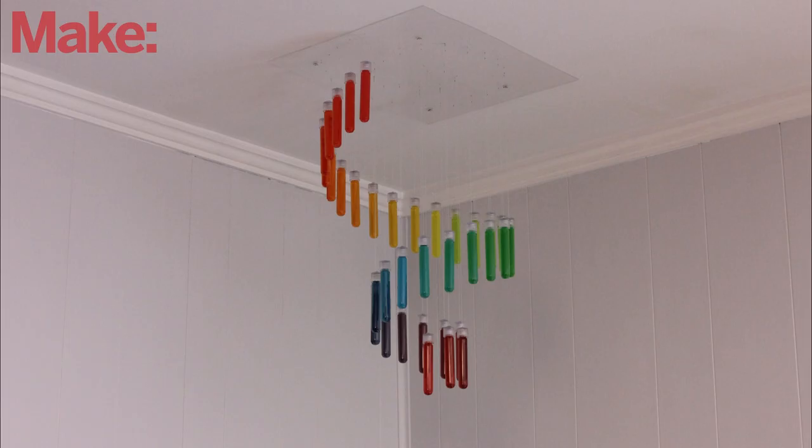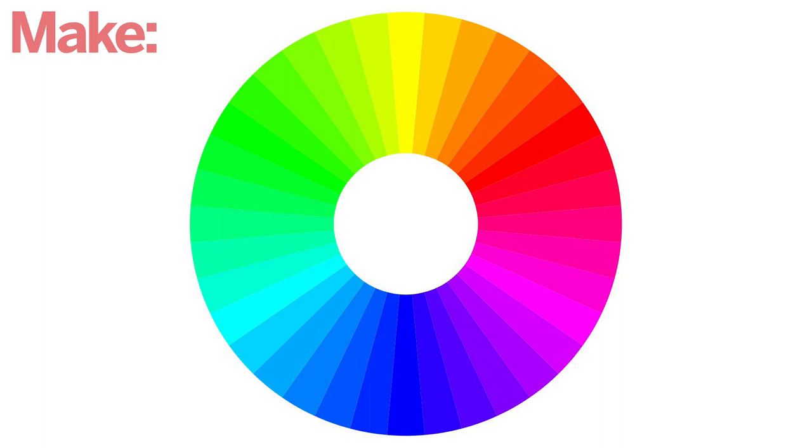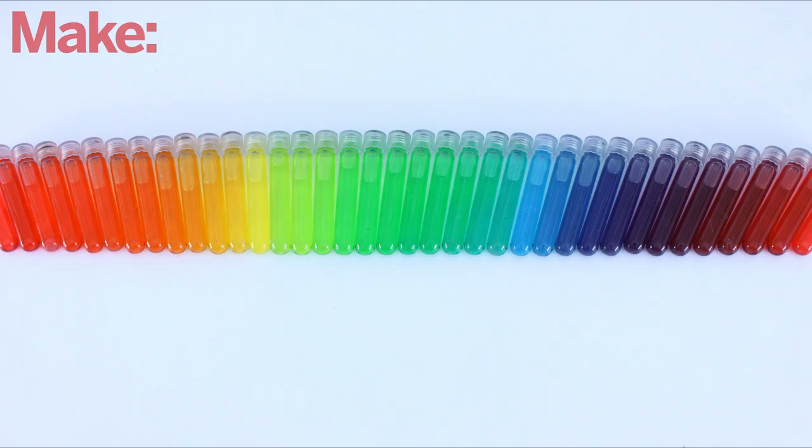Next you need to choose a color pattern. I decided to go with a continuous color wheel. The colors gradually transition from red to yellow to blue and back to red again. This is spread across 37 individual test tubes.